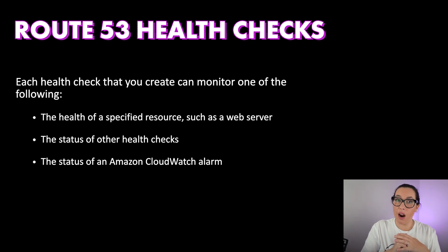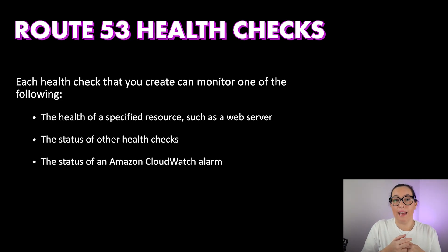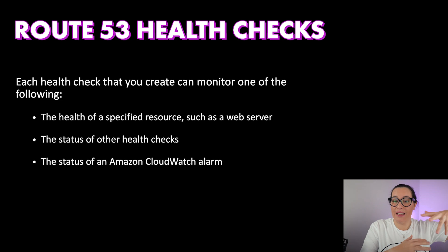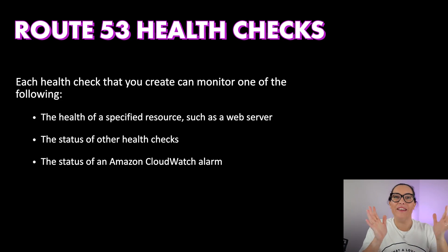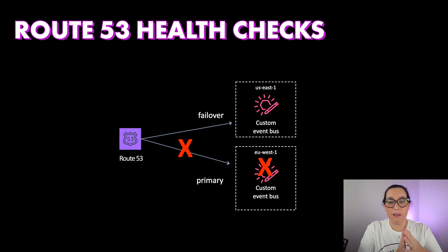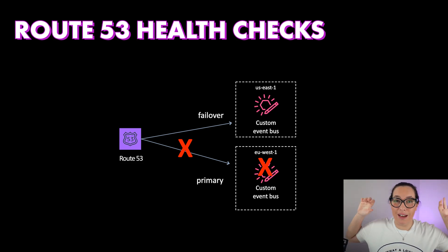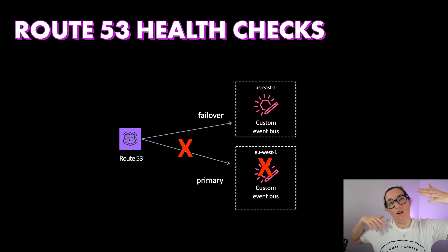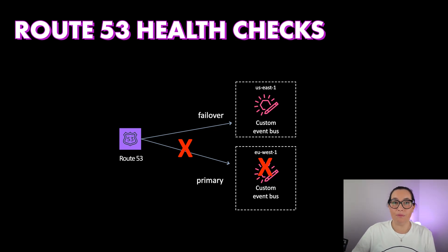Or you can have a health check based on CloudWatch alarms — set up an alarm based on an infrastructure metric or business metric, and trigger the health check when the alarm fires. You can also have a collection of health checks with a parent health check monitoring child health checks, allowing complex failover logic. When the failover happens and the primary region is unhealthy, traffic fails over to the secondary region.